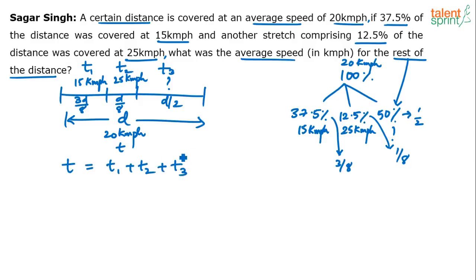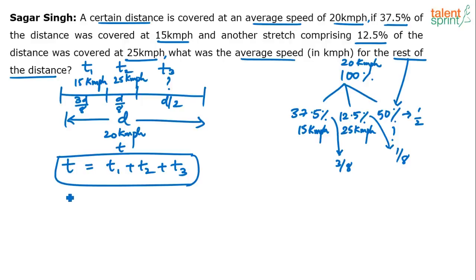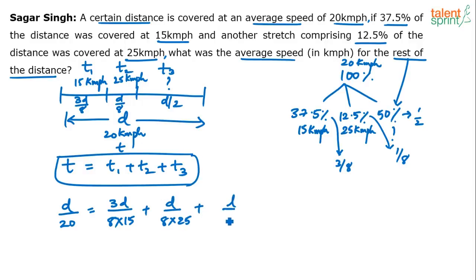Since time equals distance divided by speed: T = D/20, T1 = (3D/8)/15, T2 = (D/8)/25, and T3 = (D/2)/S. So the equation is D/20 = (3D/8)/15 + (D/8)/25 + (D/2)/S. D cancels throughout, so we don't need to worry about the actual distance. This gives us: 1/20 = 3/120 + 1/200 + 1/(2S), which simplifies to 1/20 = 1/40 + 1/200 + 1/(2S).